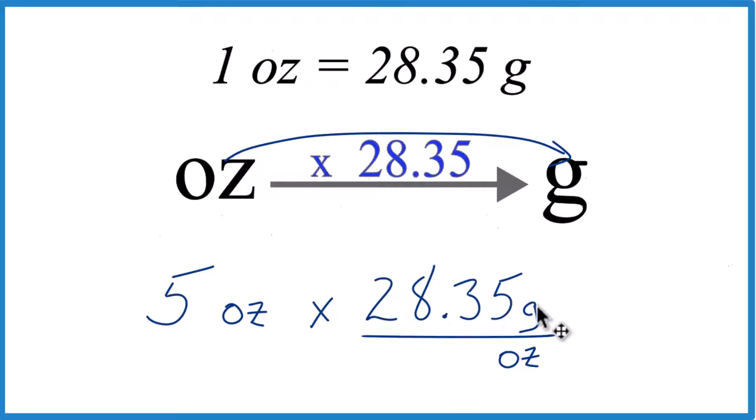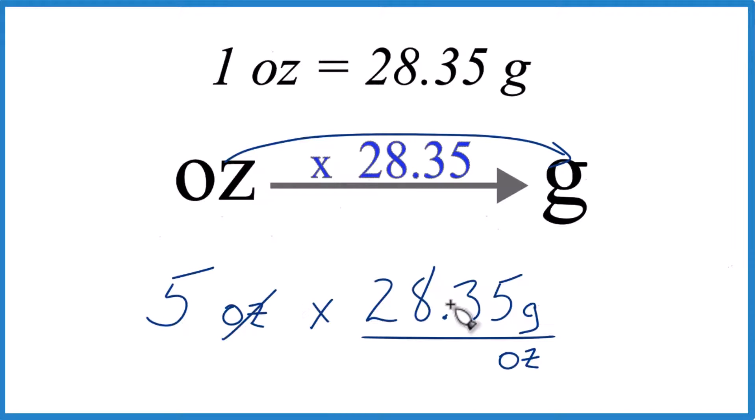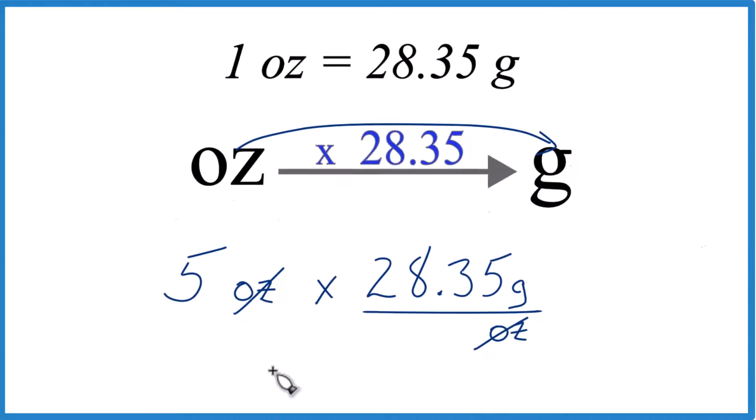But that's 28.35 grams per ounce. Up here, we said there's 28.35 grams in one ounce. That way, when we multiply, the ounces are on top, and then on the bottom here, when we multiply, they're gone. We're left with grams. That's what we're looking for.